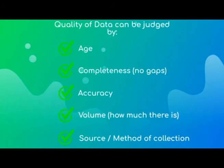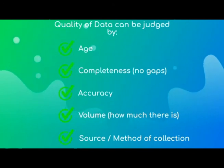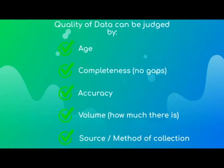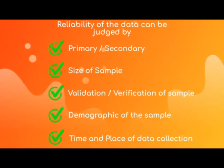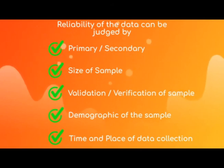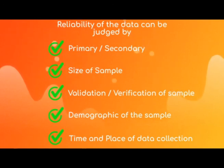The quality of data can be judged by its age, its completeness meaning no gaps, accuracy, volume — so how much of it there is — and the source and method of collection used. The reliability of the data can be judged by whether it is primary or secondary, the size of the sample, validation and verification of the sample, the demographic of the sample, and the time and place of data collection.